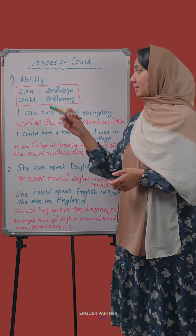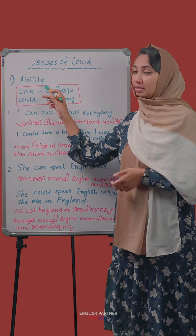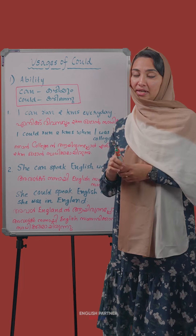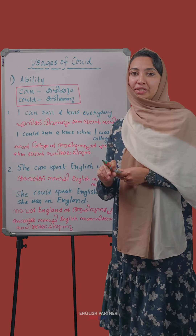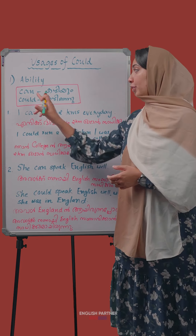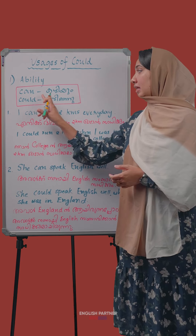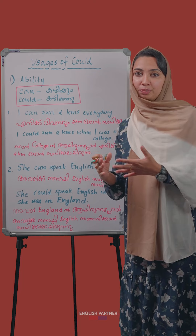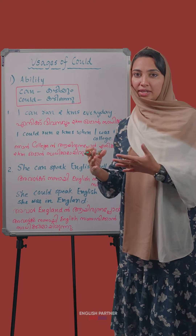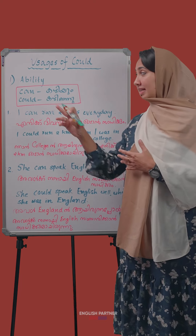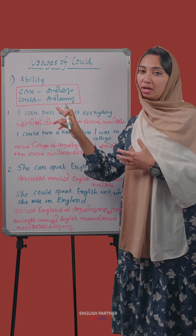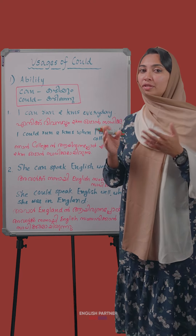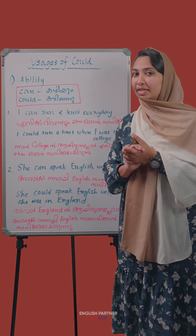So the first usage is ability. We are going to be able to use 'Could'. 'Can' is also called 'Could'. We are able to use it — for example, 'I can swim, I can run.'